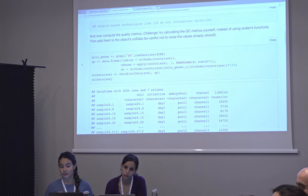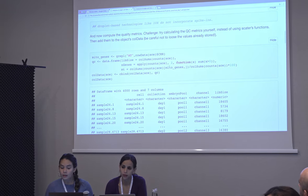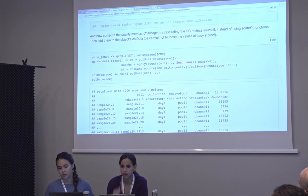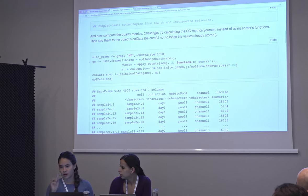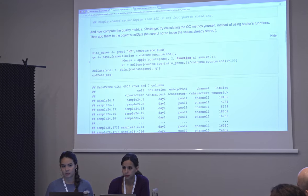The 2 in apply is for columns — you're applying the function by columns, the second dimension. So you want to count the number of genes in each cell. You can also just do counts greater than zero and call colSums on something.